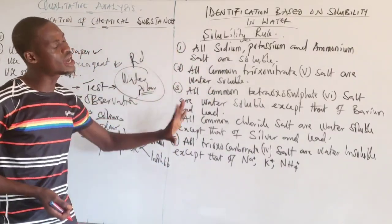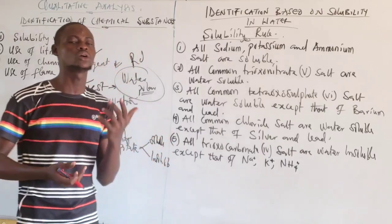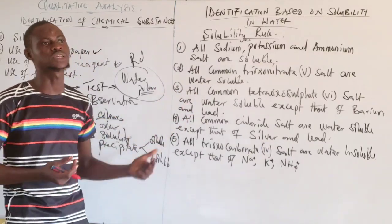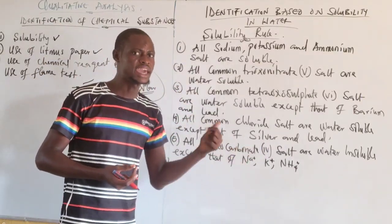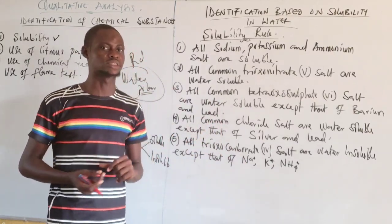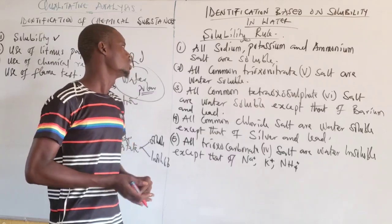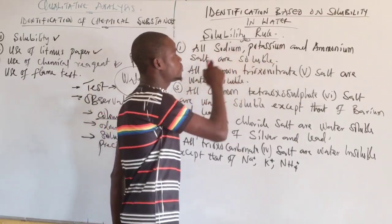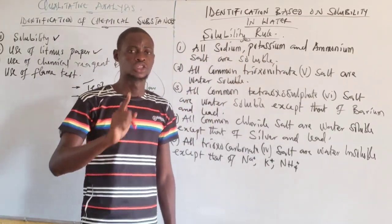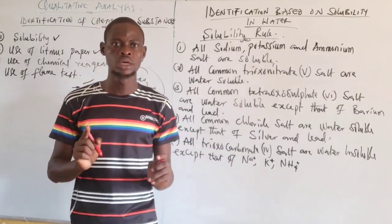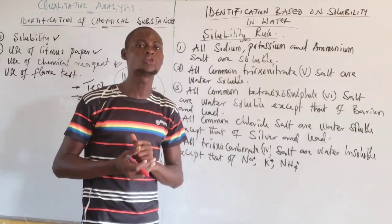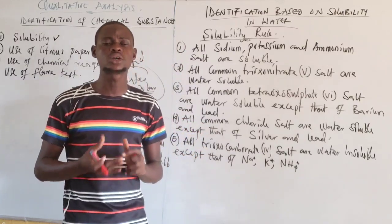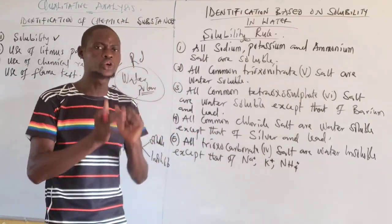Substances can be identified based on the solubility rule. I'll list out the solubility rules on the board. Rule number one: all sodium, potassium, and ammonium salts are soluble. The salts formed by these three substances are always soluble — they are polar and will surely dissolve in water, regardless of what element they combine with.